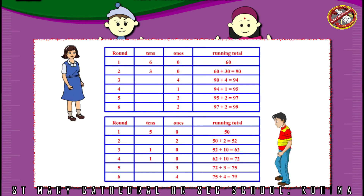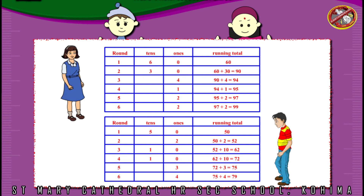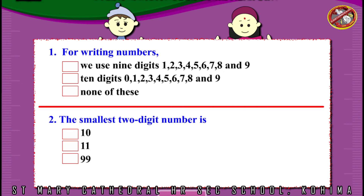My total is ninety-nine. I won! My total is seventy-nine. I could not win. We did the correct answer.